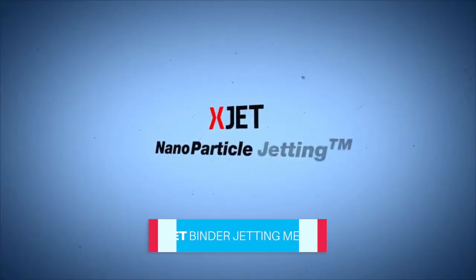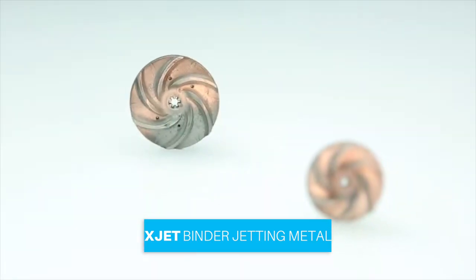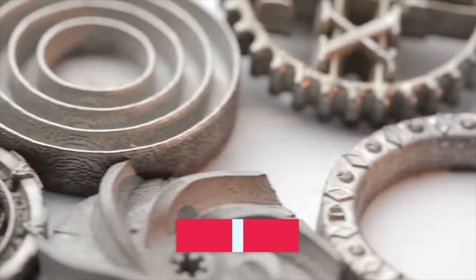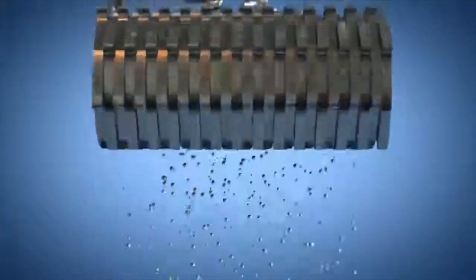X-Jet Nanoparticle Jetting. Manufacturing high-strength metal parts with the ease and versatility of inkjet-based additive manufacturing. Here's how it works. The challenge is to enable metal to be deposited in a liquid form so it can be jetted from inkjet nozzles.